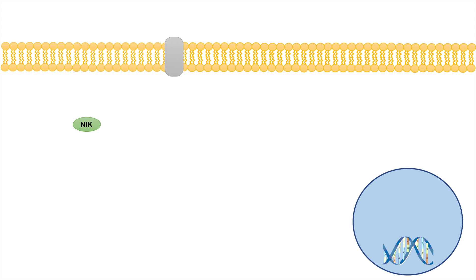What is the mechanism of action of the non-canonical NF-kappa-B signaling pathway? In a normal or constitutional state, this pathway is considered inactivated. When inactivated, NIK — or NF-kappa-B-inducing kinase — is bound to another protein known as TRAF3, which is TNF receptor-associated factor 3.